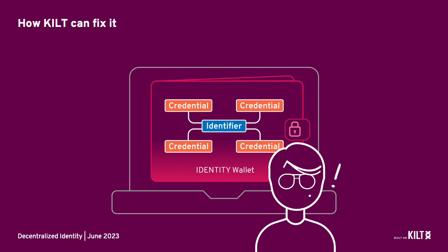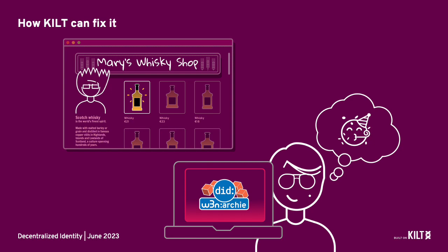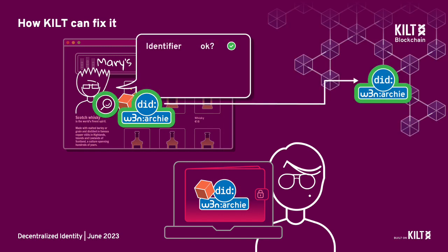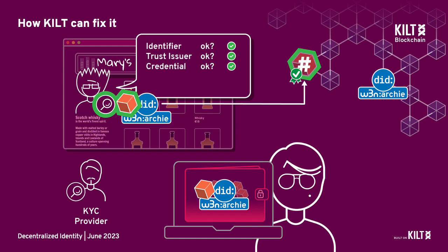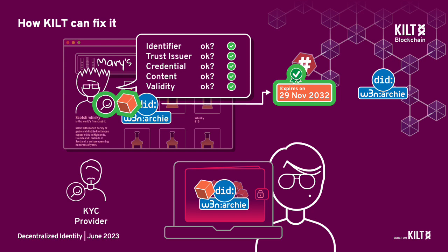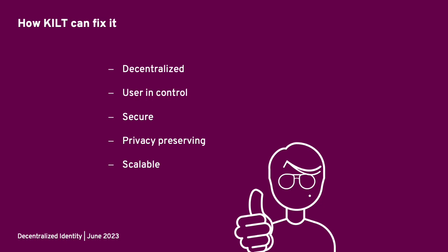You can decide how much of the information they contain to share and who you share them with. So just like the physical world, you have your unique identifier and your credentials in your wallet. Now when Archie goes to Mary's whiskey shop, there is no middleman. He can interact directly with Mary via a web app on her site. When Archie shares his information with her, Mary can check Archie's digital fingerprint or Web3 name and knows it is really Archie. She can see it is a credential from a provider that she trusts, can see the verification that it is an official credential, can see via the content Archie shares that he is legally old enough to buy her whiskey, and that the credential is still valid and hasn't been revoked. So Mary knows she can sell a bottle of whiskey to Archie. Just like the physical world, here digital identity is decentralized, under your control, secure, privacy-preserving and scalable.